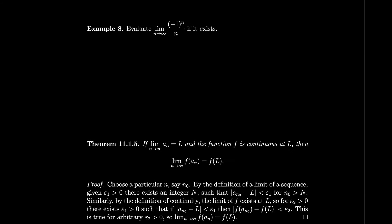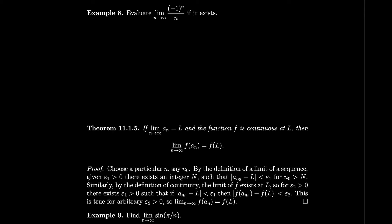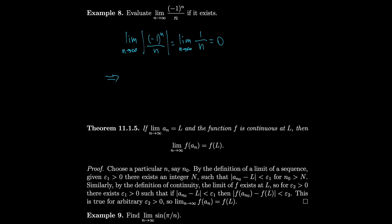Now evaluate lim (−1)^n / n. We take advantage of the absolute value theorem: lim |(−1)^n / n| = lim 1/n = 0, since |(−1)^n| = 1 always. Since lim |an| = 0, our theorem implies that lim (−1)^n / n = 0 as well.